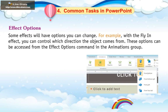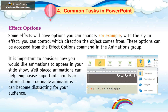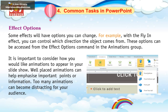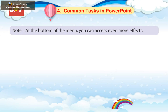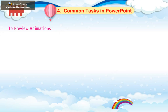Effect Options: some effects will have options you can change. For example, with the fly-in effect, you can control which direction the objects come from. These options can be accessed from the Effect Options command in the Animations group. It is important to consider how you would like animations to appear in your slideshow. Well-placed animations can help emphasize important points. Too many animations can become distracting for your audience. Note: at the bottom of the menu, you can access even more effects.